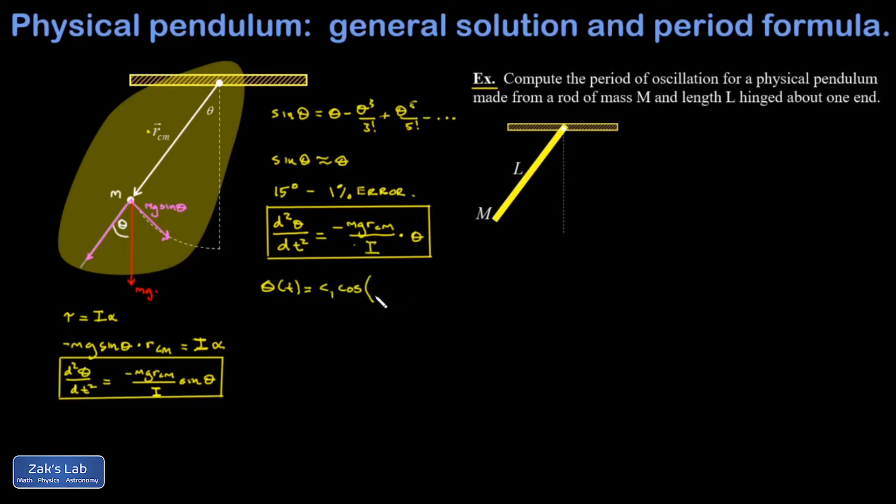And this has two arbitrary constants in it, c1 and c2. And in some problems, you might be given a set of initial conditions, an initial angular position, an angular velocity, and then you could actually find theta of t.